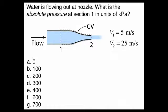All right, this problem involves water flowing out a nozzle. Our goal is the absolute pressure, and we've got to be careful here because almost always we use gauge pressure, and we're looking for that at section 1.